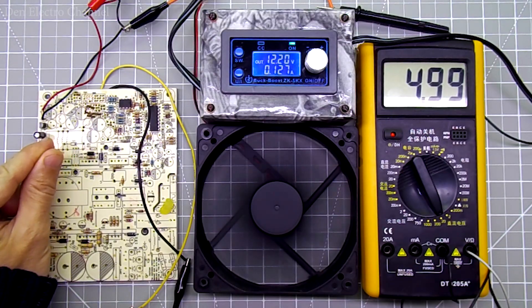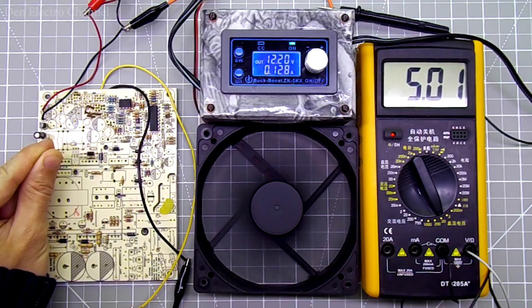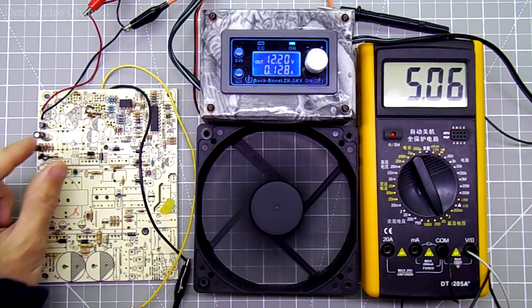Even if you touch the thermostat with your hand, the voltage on the fan does not rise much. We can say that the circuit does not react to body temperature at all. For the fan to spin faster, a higher temperature is needed.